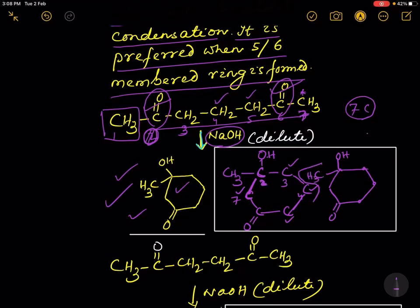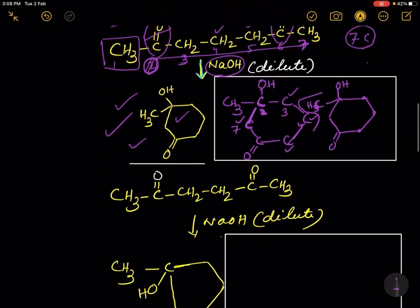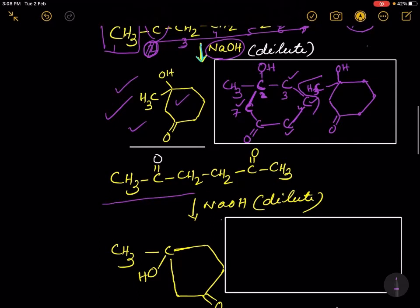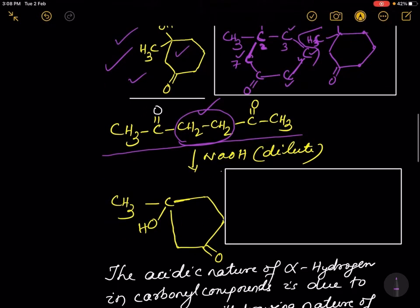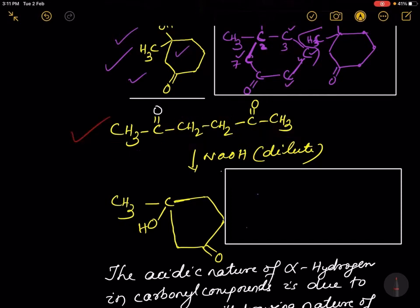Let us take another example: CH₃COCH₂CH₂CH₂COCH₃. This is a diketone, but in between the two carbonyl groups you will find two CH₂ groups. The carbon atoms are numbered as 1, 2, 3, 4, 5, 6. In between the two C=O groups you will find two CH₂ groups. Now we have to draw the structure.